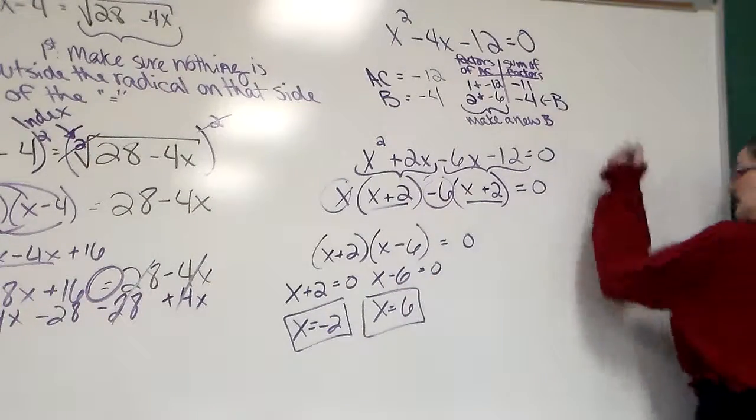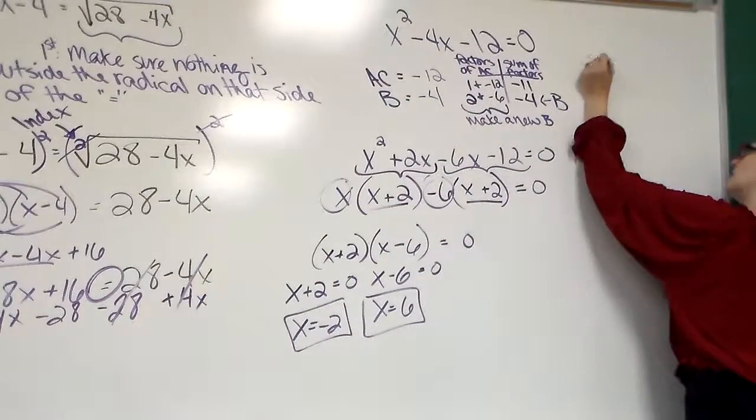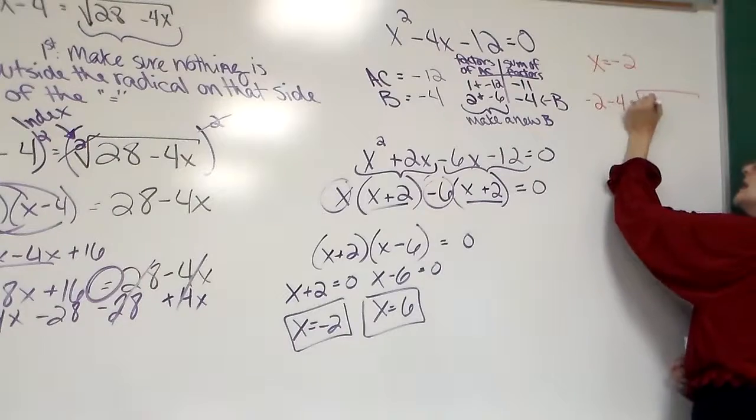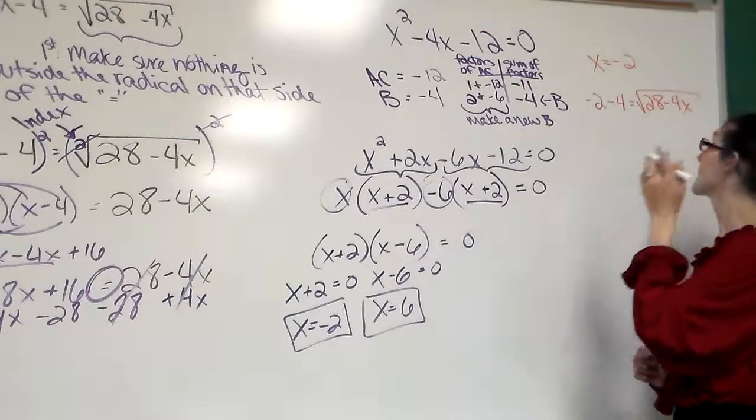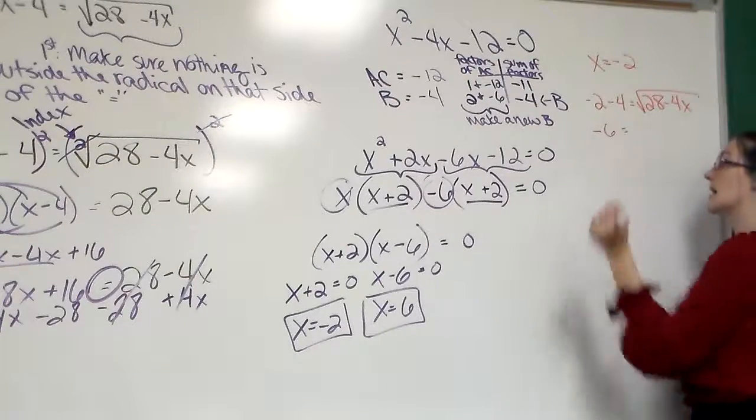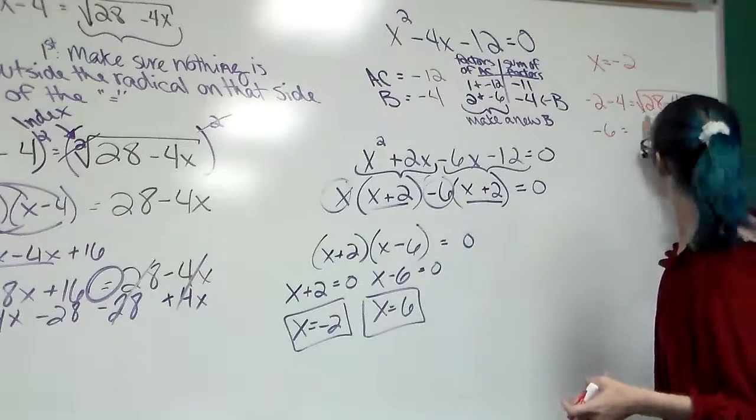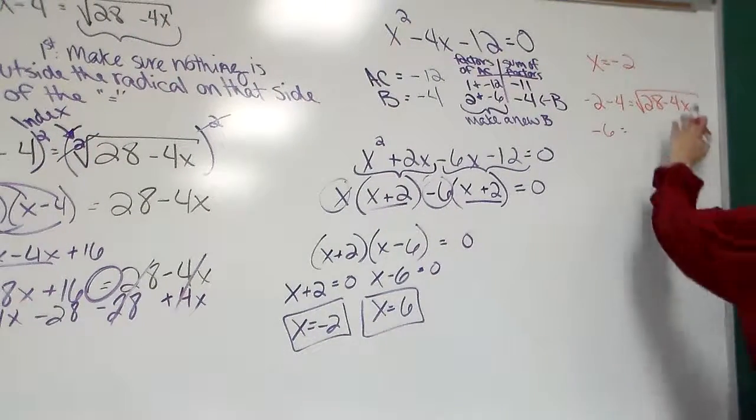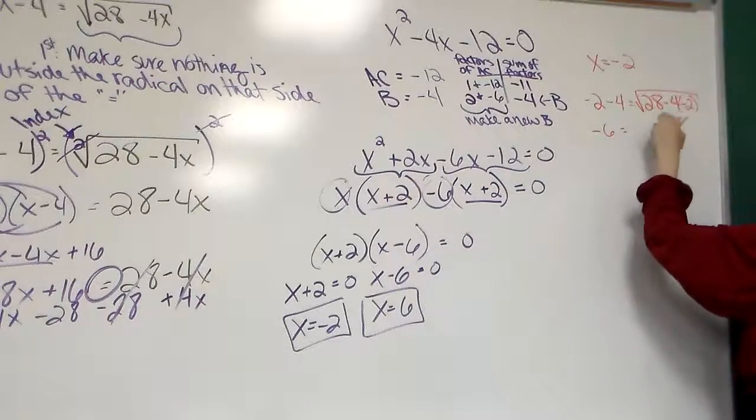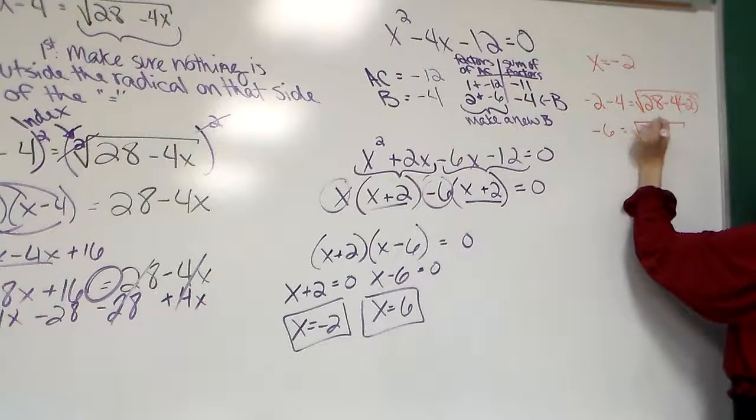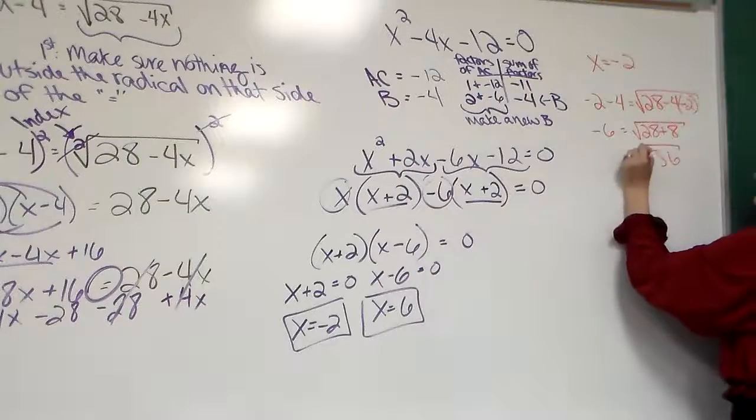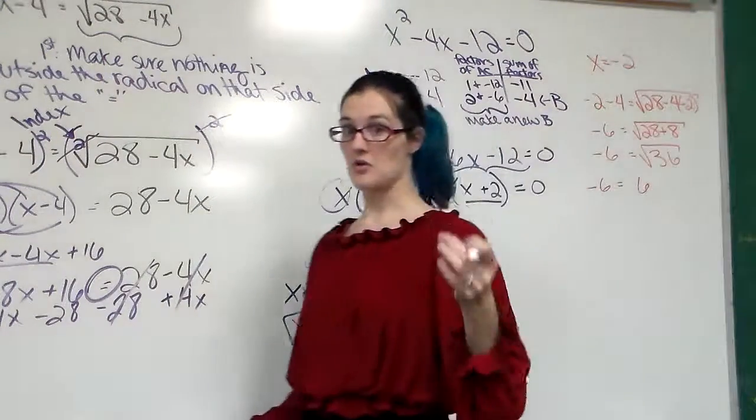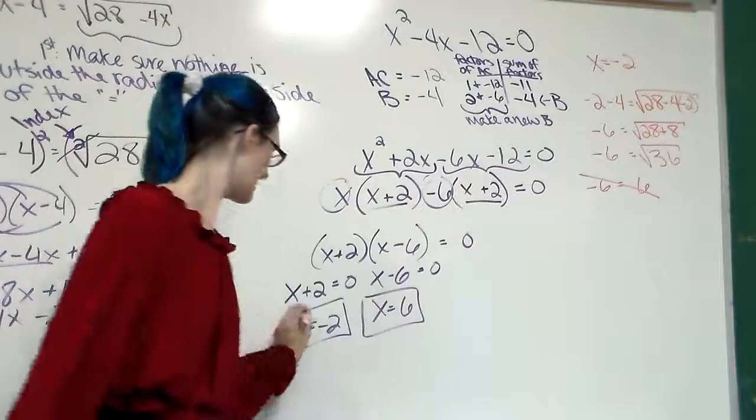And we're just going to plug these numbers in. If I plug in x equals negative 2 to the original problem, negative 2 minus 4 equals the square root of 28 minus 4x. And just do the math. Negative 2 minus 4, that's a negative 6. Any hesitation on sign numbers, use your calculator. 28 minus 4x, you'll see all the way to the end. x is not x. x is negative 2. So 28 minus 4 times negative 2, that's 28 plus 8, which is 36. And the square root of 36 is 6. Again, we look for the principal answers, so we're going positive. Negative 6 does not equal 6.